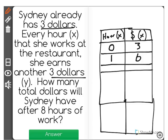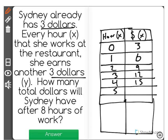We can see then that after 2 hours she'd have $9. 3 hours, 12, so on and so forth. 4 hours would be 15, 5, 6, 7, 8.